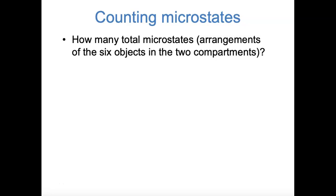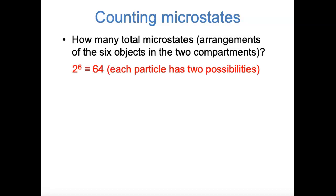Let's put some numbers to this. If you have six objects where each one is either on the left side or the right side of the box, how many total microstates are there? The total number of microstates is 2 to the sixth power, or 64. Each of those six particles can be on either the left or the right side, so each particle has two possibilities. The total number is 2 for the first particle times 2 for the second times 2 for the third, and so on — each particle independently can be in one of two sides, giving 2 to the sixth.